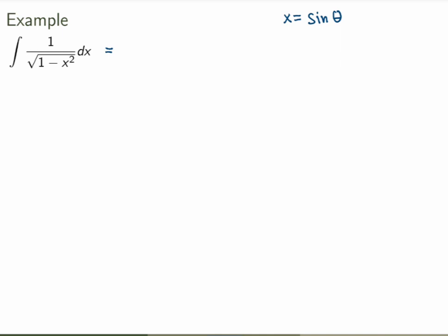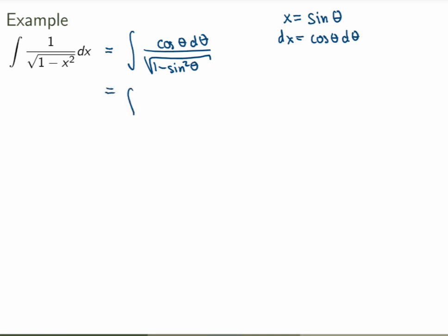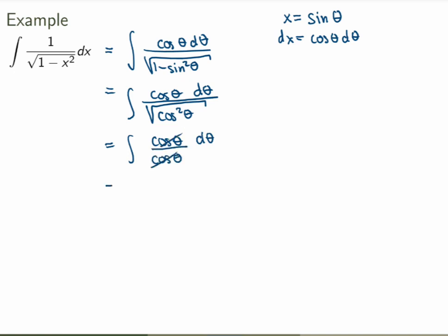Let's try it. With x = sin θ, dx equals cos θ dθ. Implementing that substitution, I get cos θ dθ over the square root of (1 minus sin squared θ). Using the identity that 1 minus sin squared equals cos squared, the square root of cos squared θ is just cos θ. So I end up with the integral of cos θ over cos θ dθ, which simplifies to the integral of dθ, giving me θ plus a constant.